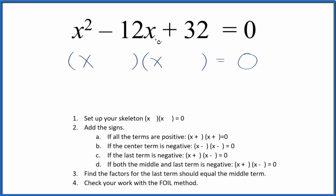Let's factor x squared minus 12x plus 32. And the first thing we want to do is write a skeleton equation. This is our skeleton equation right here.